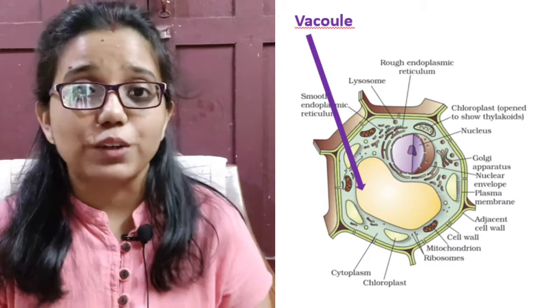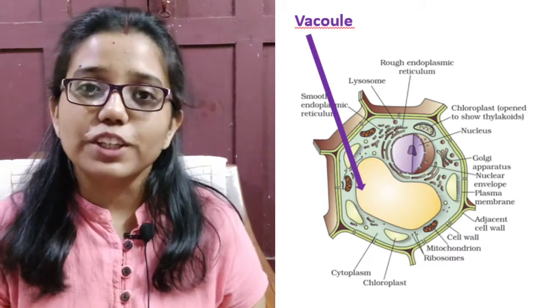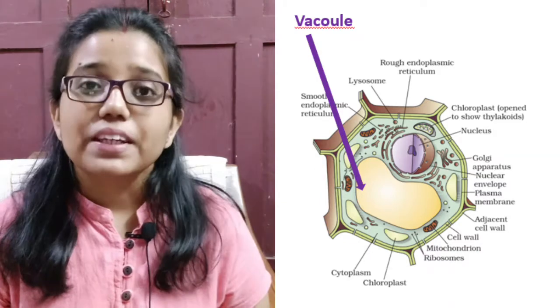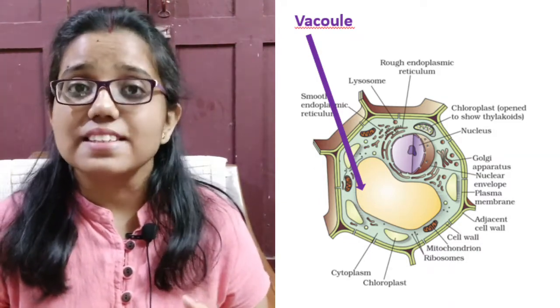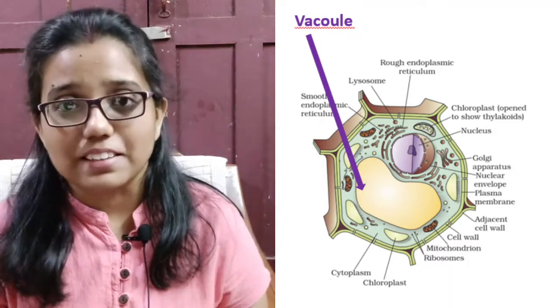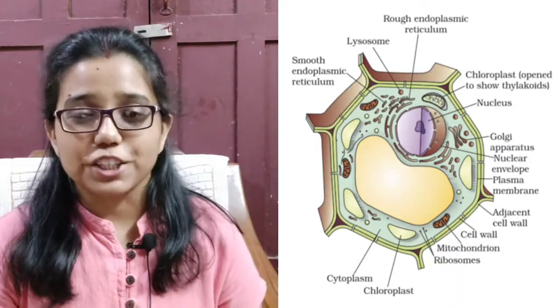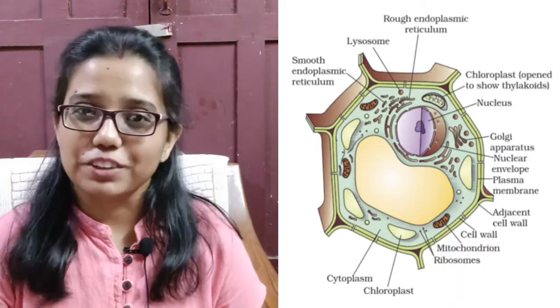And the last one is vacuoles. Vacuoles are storage sacks for solid or liquid contents of the cell. These are very small in animal cells but large in plant cells as they provide rigidity to the cell. So this is an outline structure of cell, the fundamental unit of life.